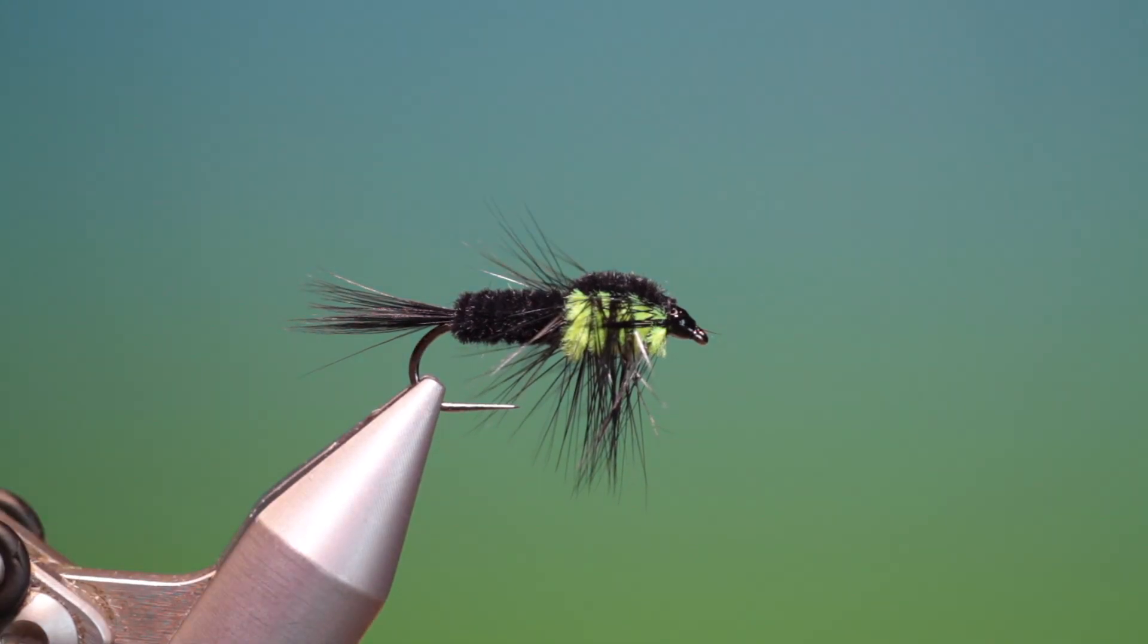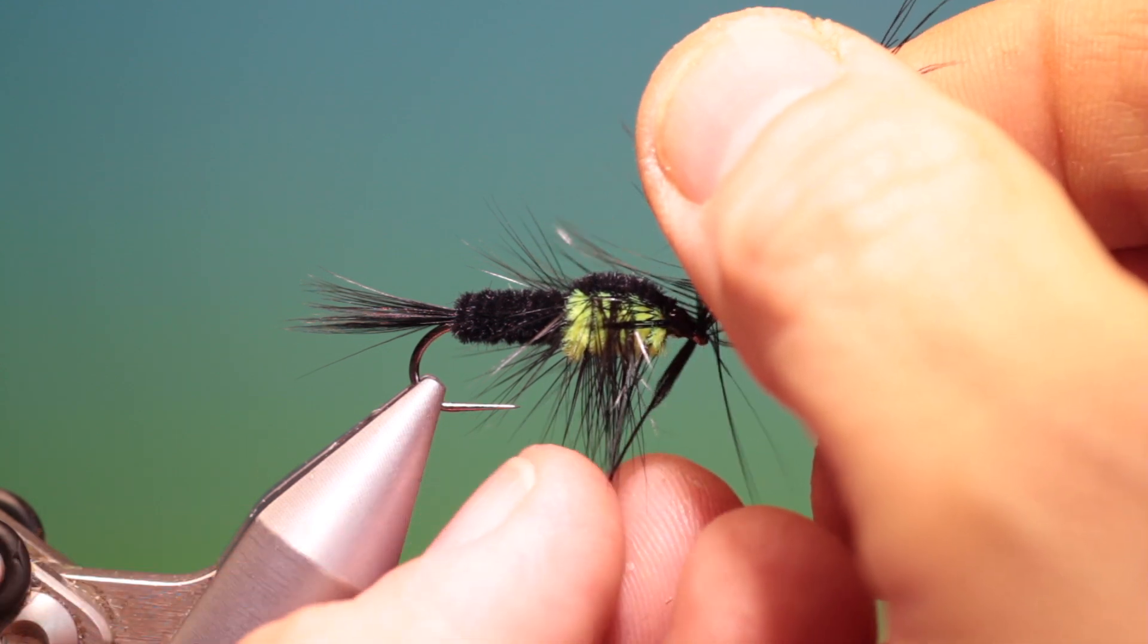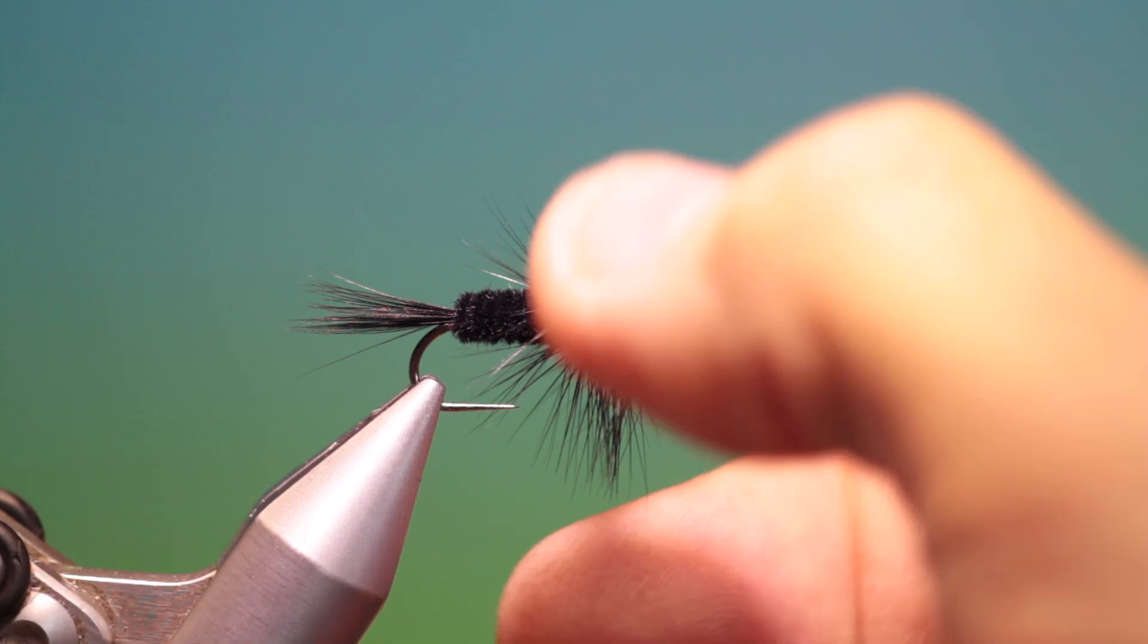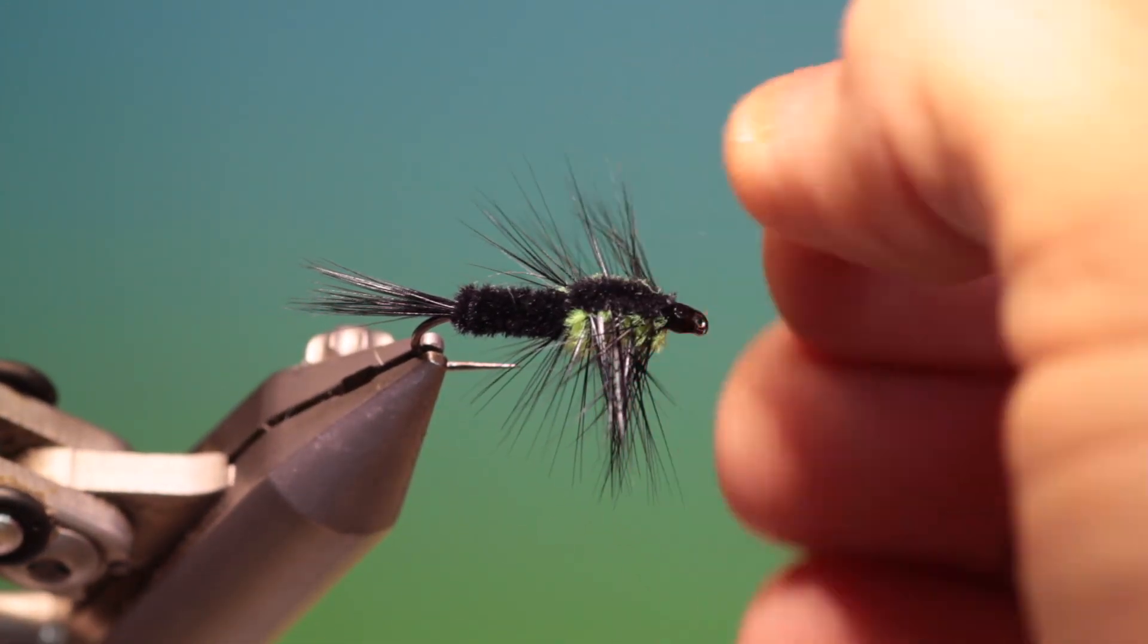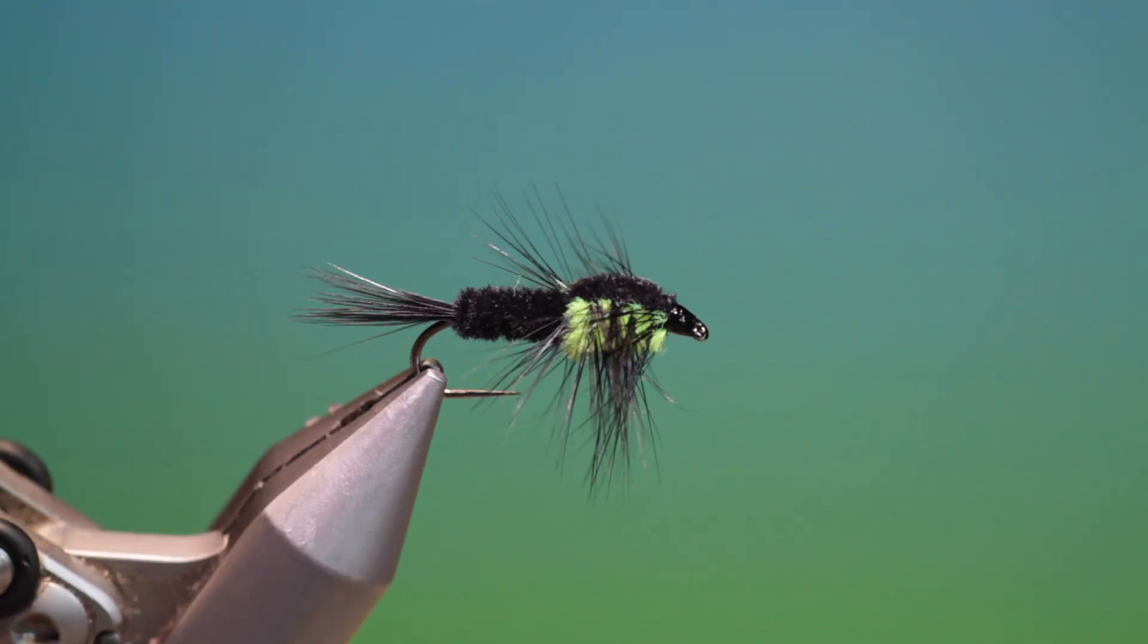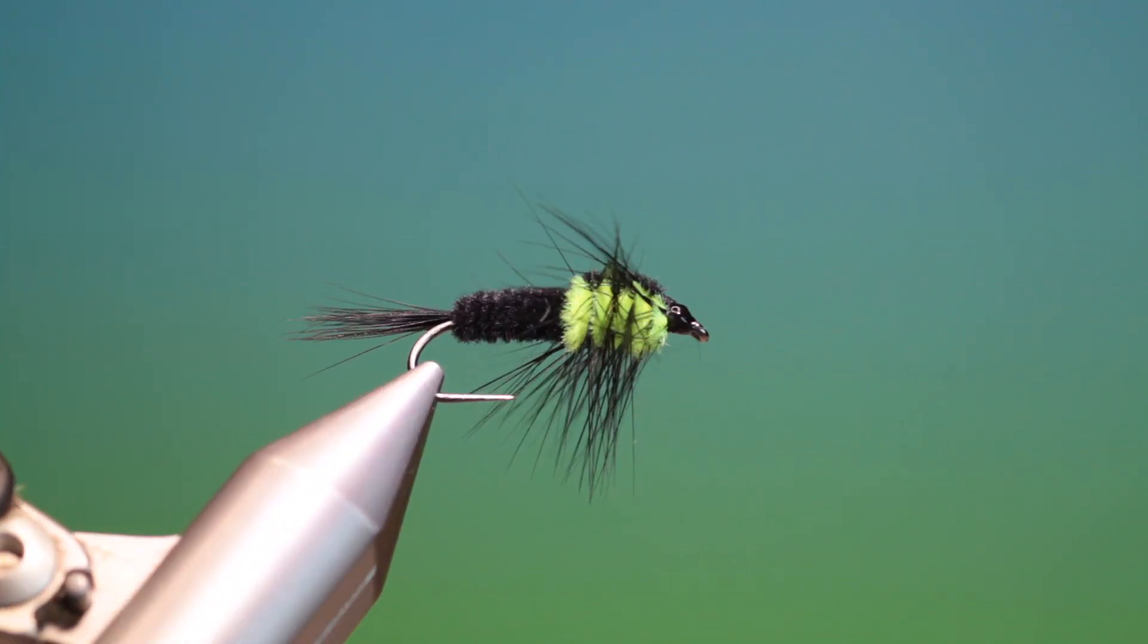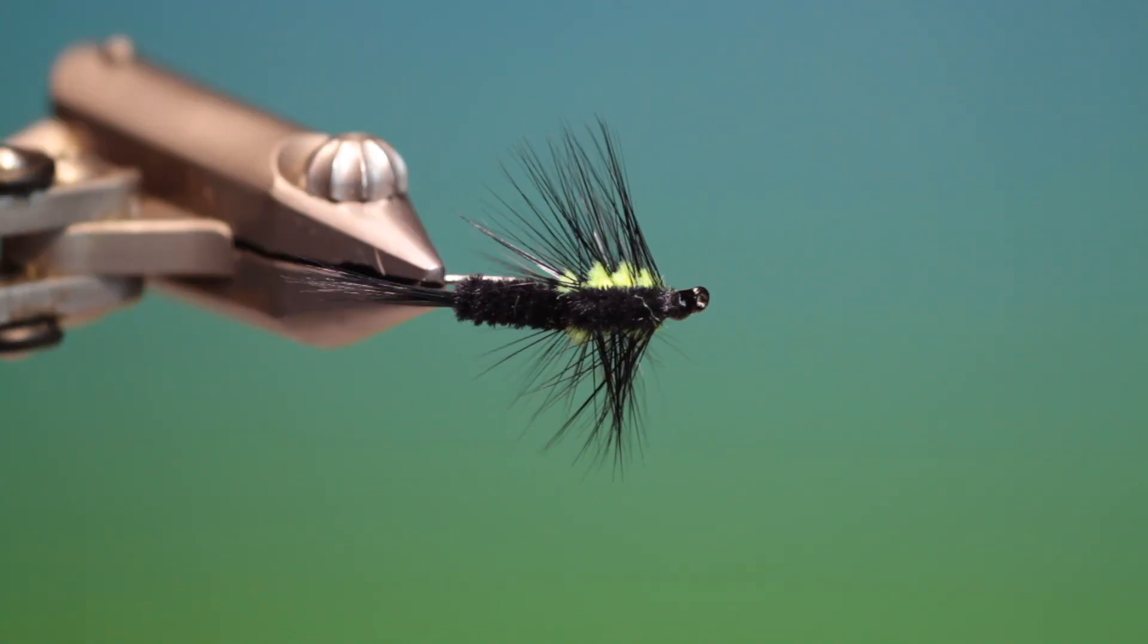There we are. And then if you've got a hackle bit, you can just place it in the eye and pull it through. And that's the finished Montana nymph. If you enjoy the videos, please like, share, subscribe, and thanks for watching.